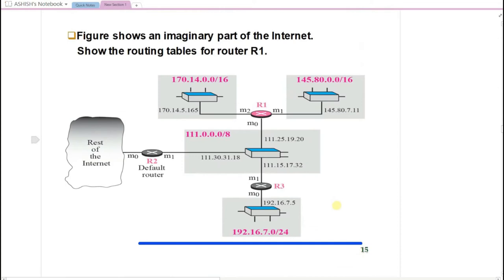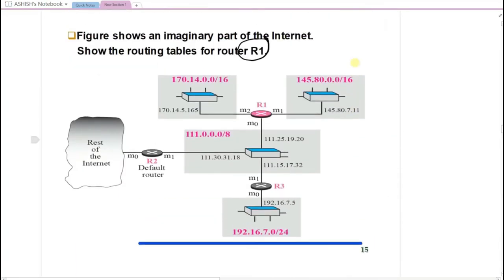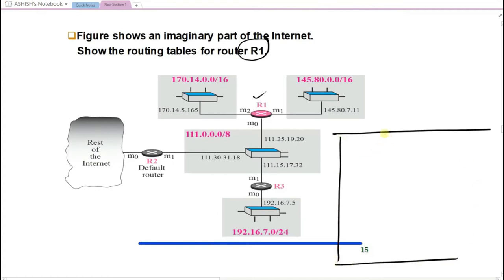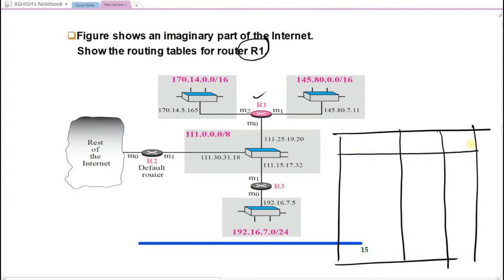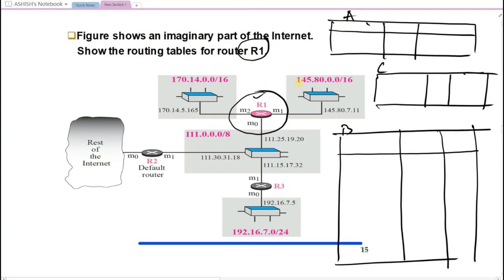Now we will draw the routing table for R1. The routing table contains three parts: network address, next hop address, and interface number. Since we are discussing classful addressing, we need to make three routing tables — one for class A, one for class B, and one for class C.